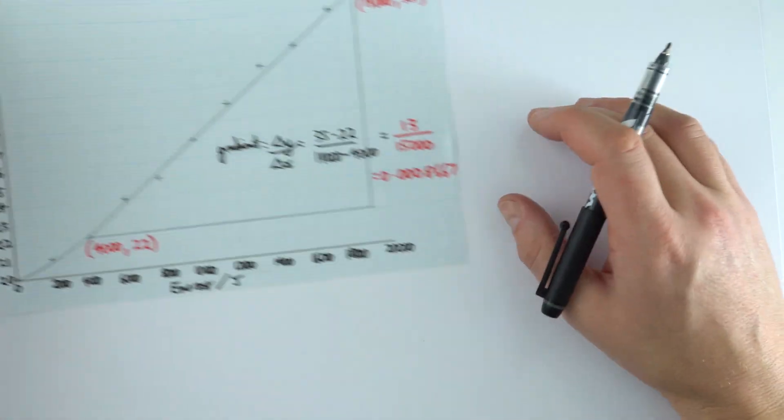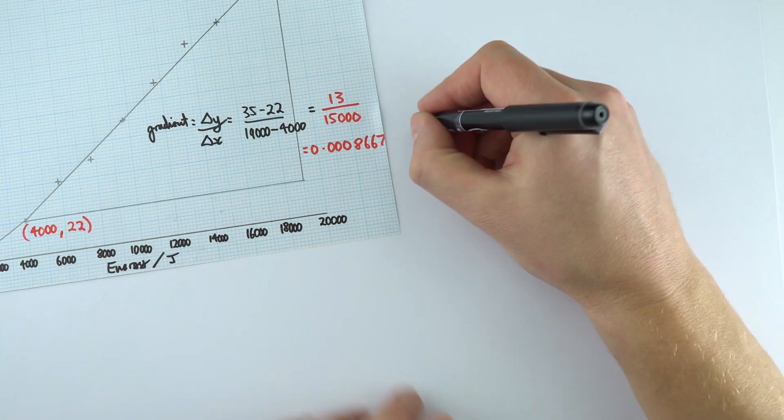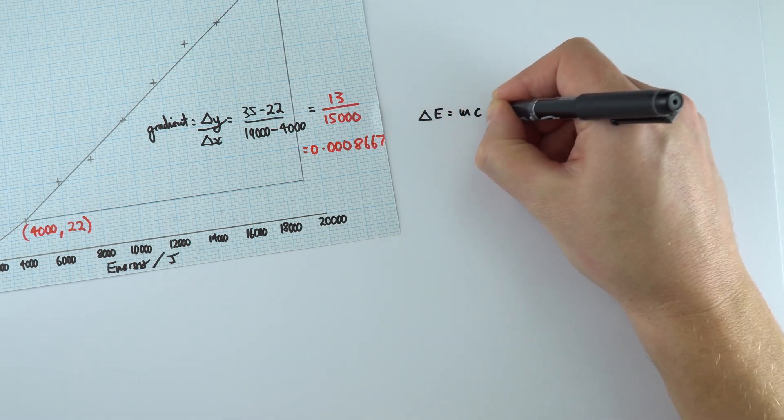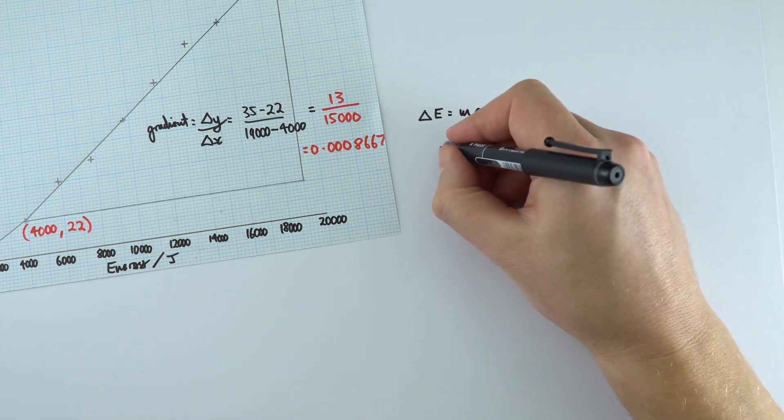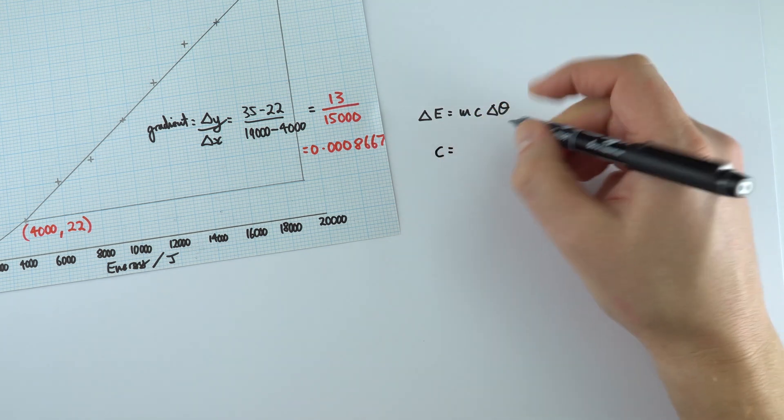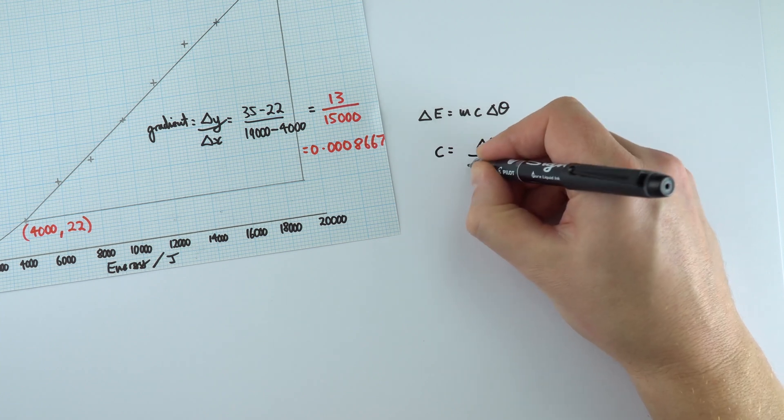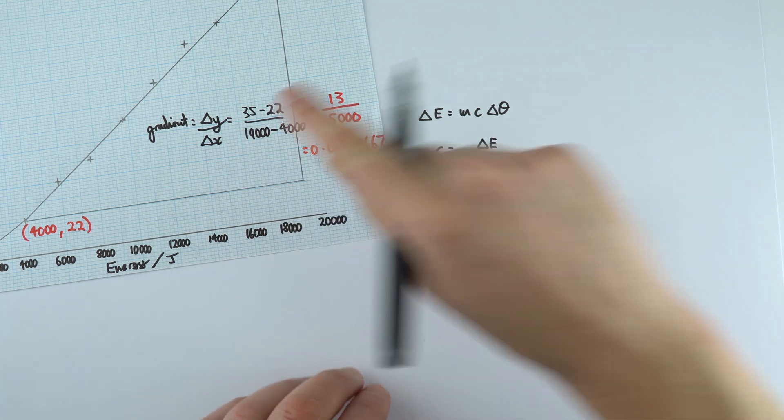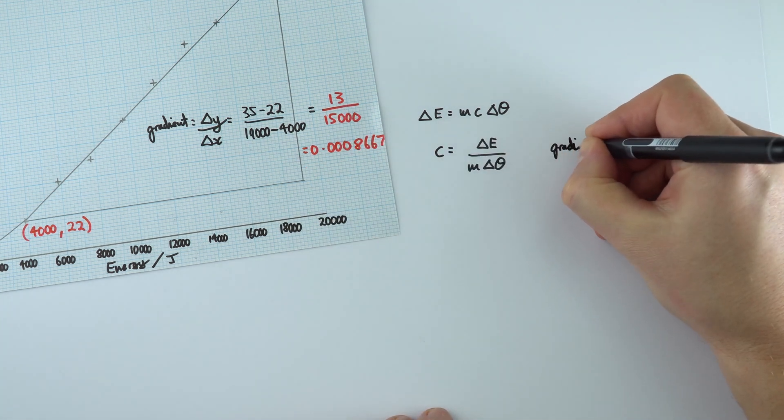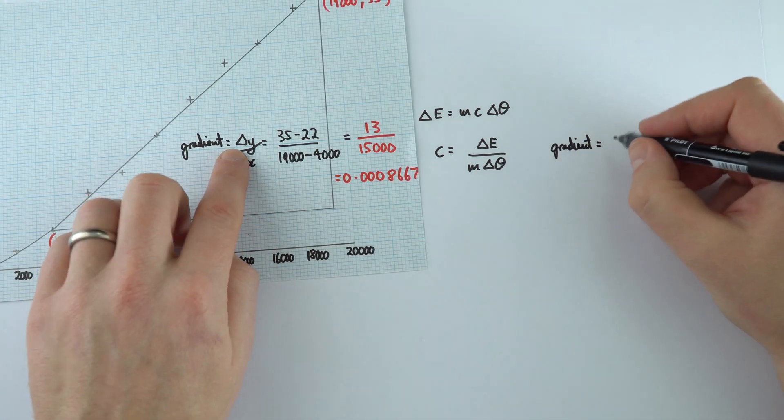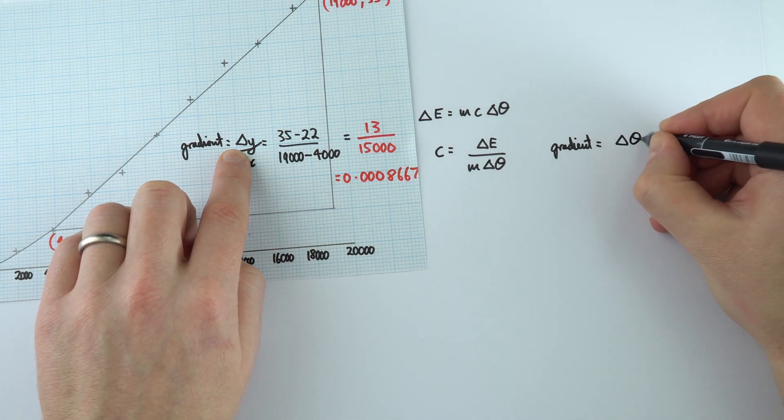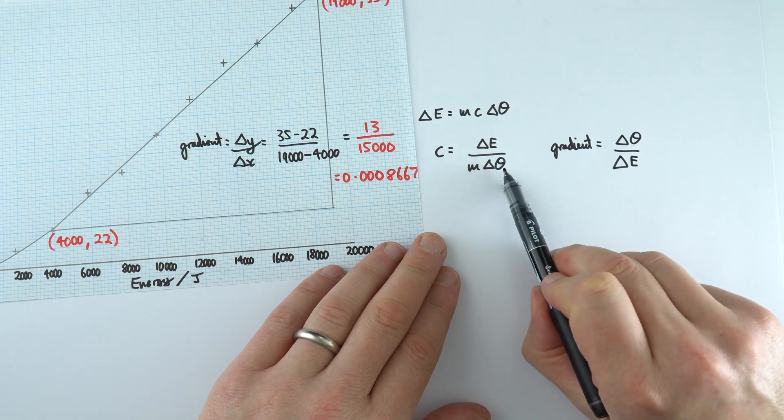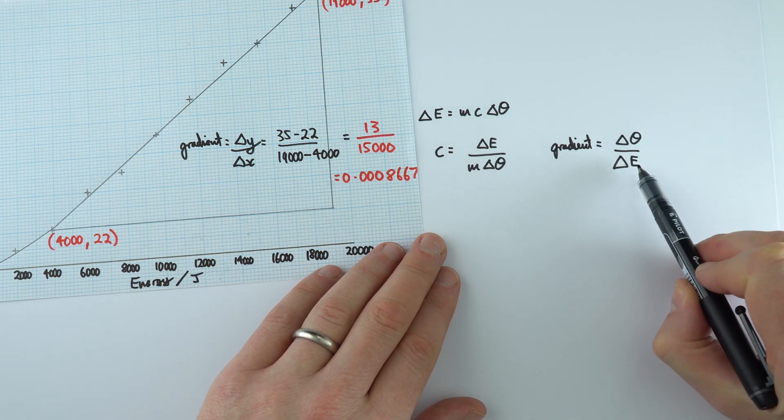Now we can use this value here for the gradient to actually work out the specific heat capacity of this aluminum. So the change in energy transferred is equal to mc delta theta. And we can rearrange this to say that the specific heat capacity is equal to the change in energy divided by m delta theta. Now this is related to the gradient because the gradient of that line was equal to the change in y value, which was our change in temperature divided by the change in energy delta E. And here we've got delta E over delta theta, but here we've got delta theta over delta E.